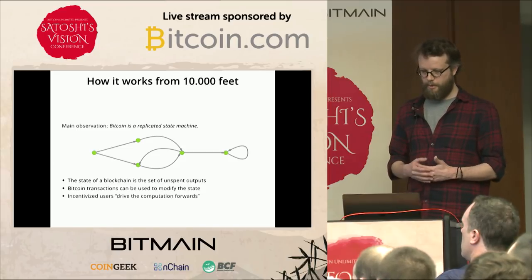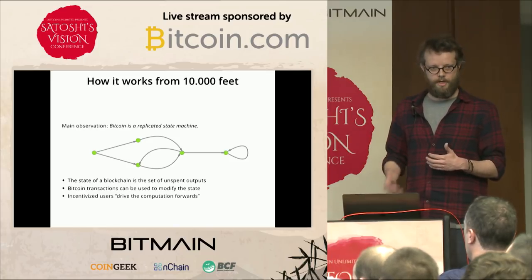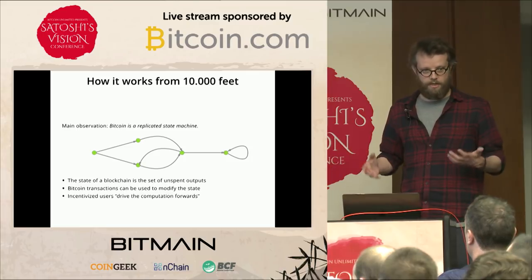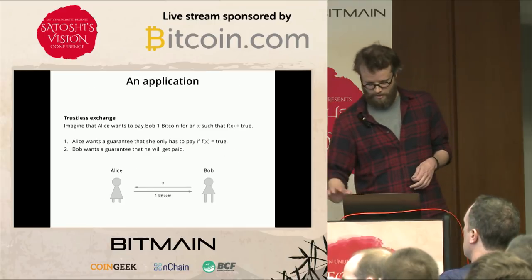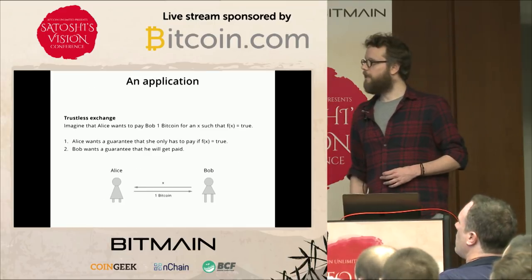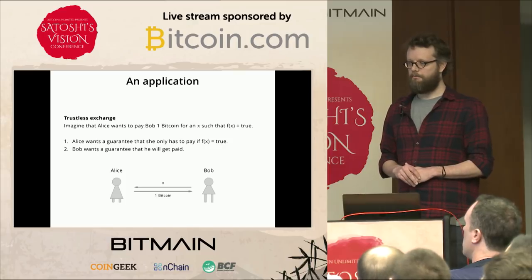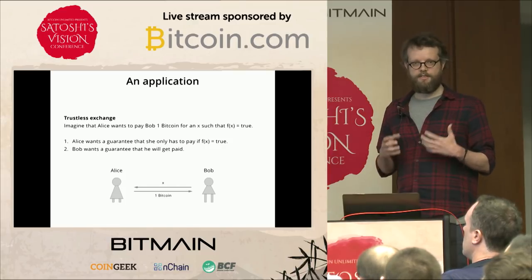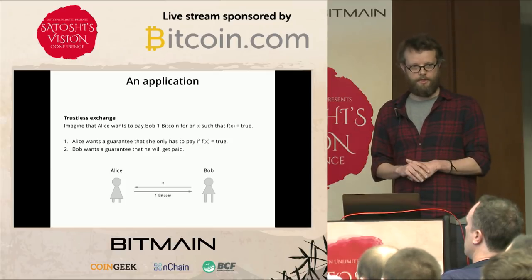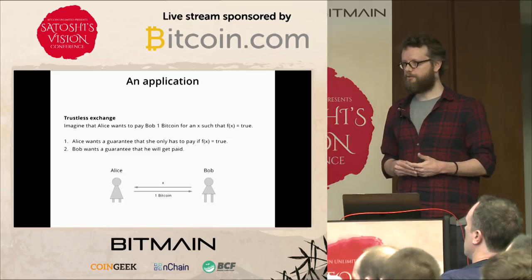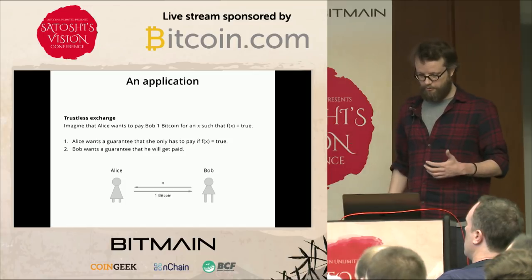How does this map to Bitcoin? In Bitcoin, the entire state is stored in the blockchain, and in particular the unspent output set contains the data that can be changed. We can encode data in unspent outputs. Bitcoin transactions spend unspent outputs and destroy them, then create new unspent outputs — so to do a database update, you destroy the output containing the old tuple and create a new one with the new tuple.